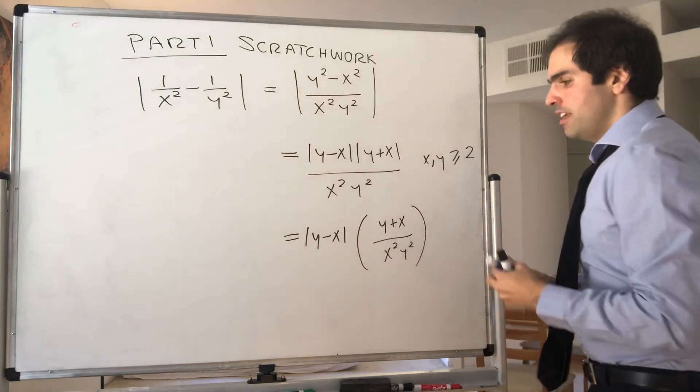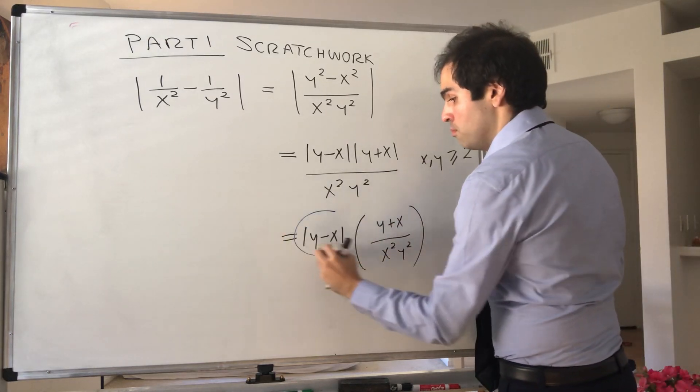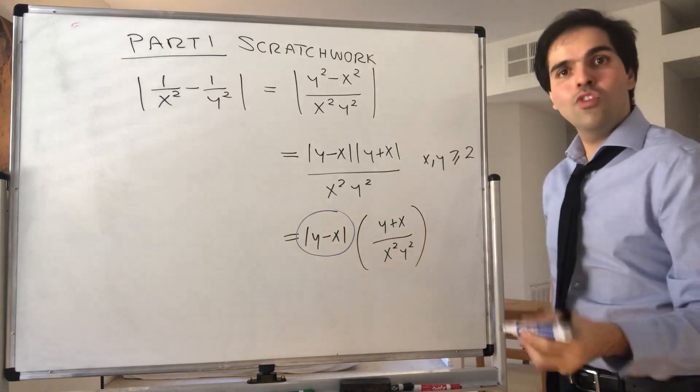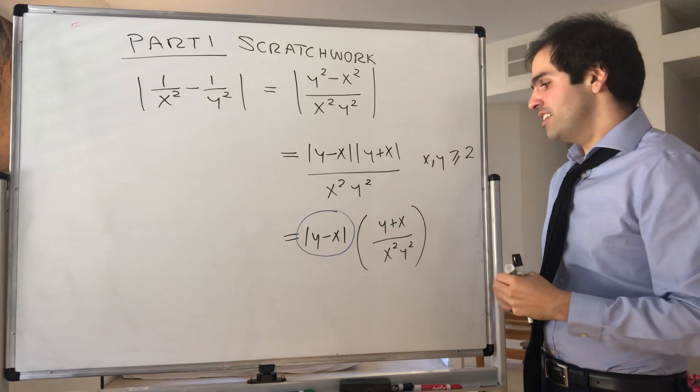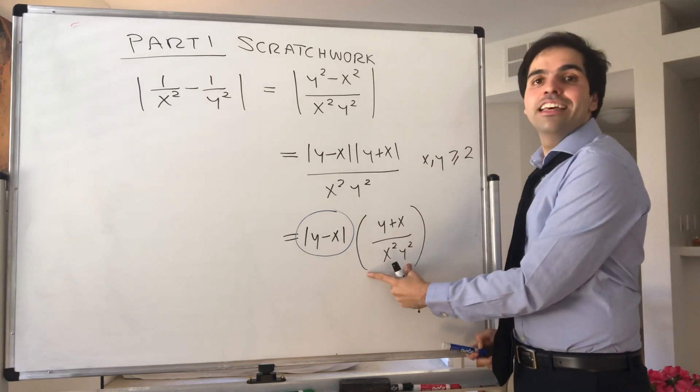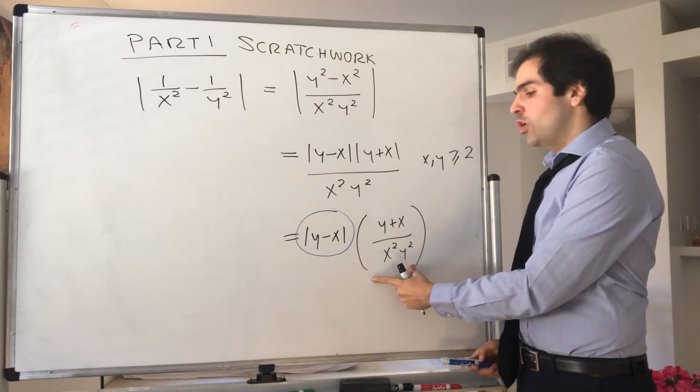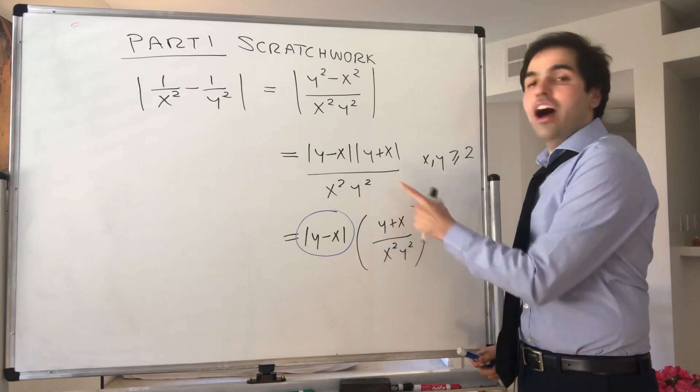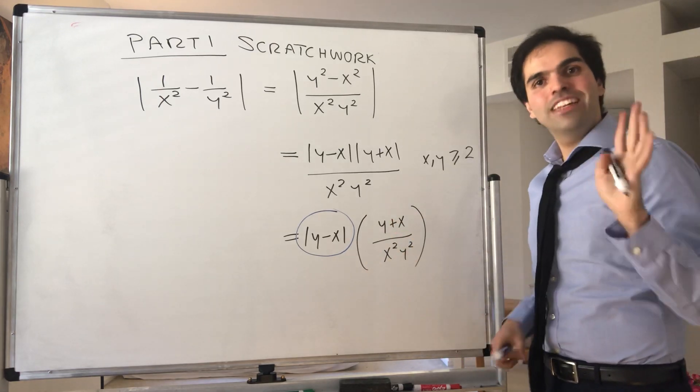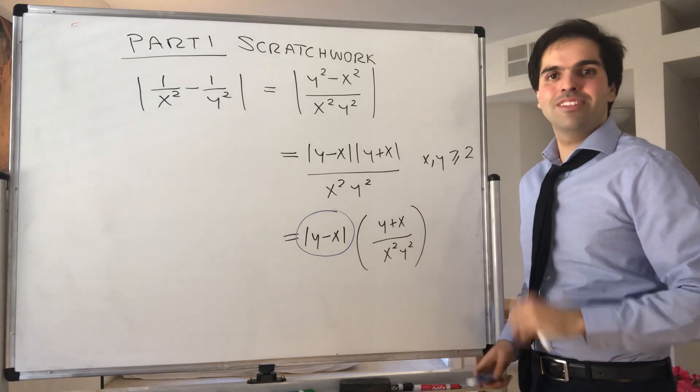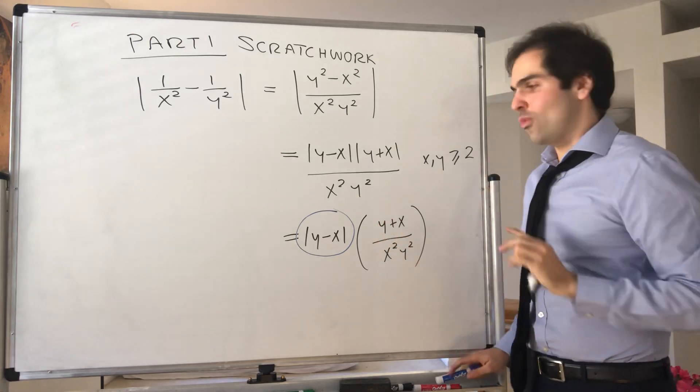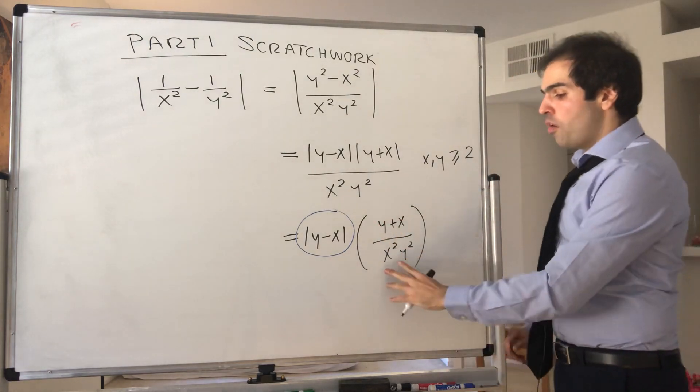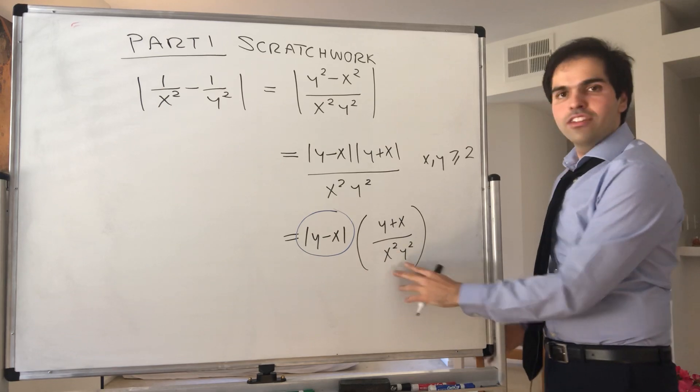Now, this term is good. It's the term we have control over that we can set less than delta. This term is bad. It's the stuff we want to control and ideally make this a constant. Because remember, our delta can only depend on epsilon, not on x or y. But not a problem at all. Let's do a little bit of algebra.